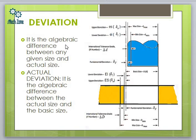Deviation is the algebraic difference between any given size and the basic size. Actual deviation is the difference between the actual size and the basic size. Fundamental deviation is always the deviation closest to the basic size — it is either the upper or lower deviation nearest to the zero line.